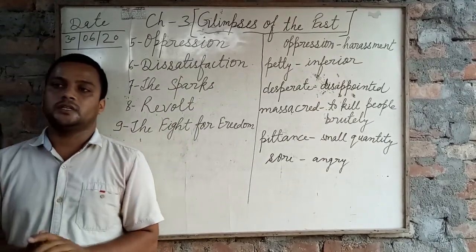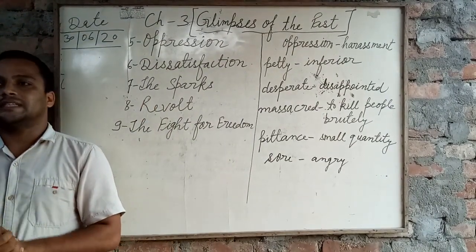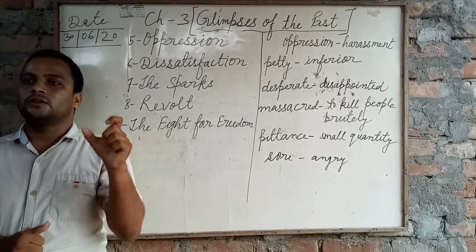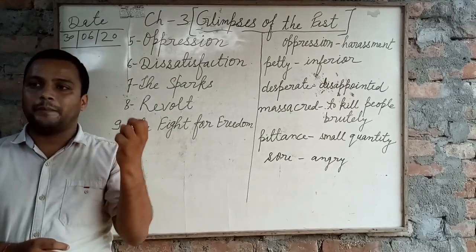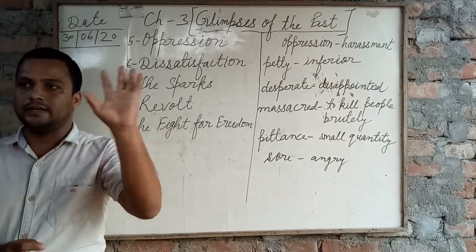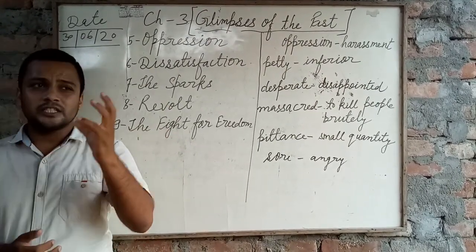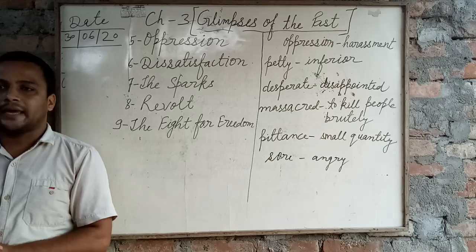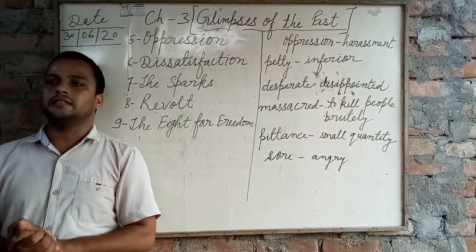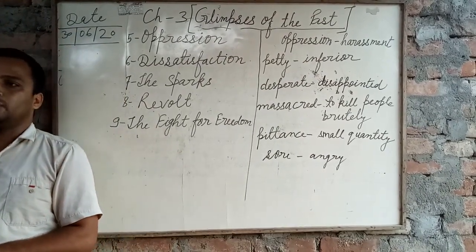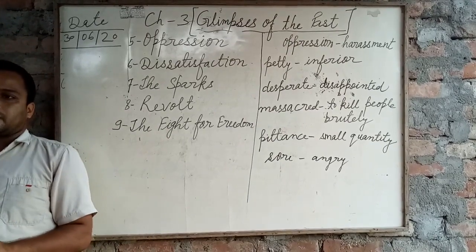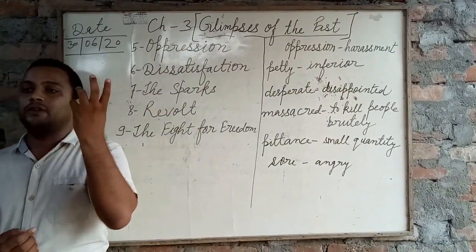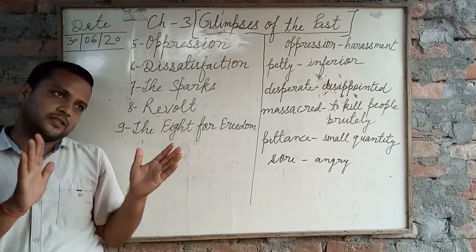Soldier Mangal Pande revolted but he was arrested. The sparks of revolution spread throughout the country. The Brahmins were told that the grease on the bullets they had to bite was made from the fat of cows and pigs, and thus the Indians were deceived. Soon chapatis were sent from one village to another to convey the message that their rulers wanted help and support. In the same way, lotus flowers were circulated among Indian soldiers to make them aware.